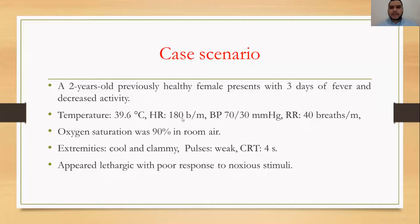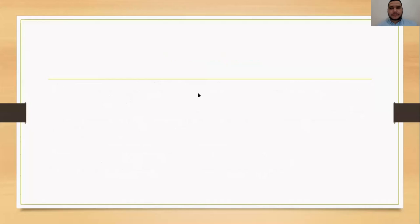You saw this patient in your clinic. What is the first step you will do for this patient? A, B, C — airway, breathing, circulation. In practical terms, what is the first step I'll do? Normal saline, IV fluid, IV line.